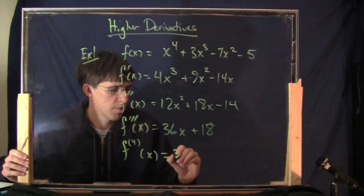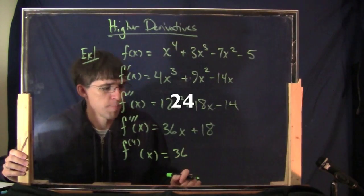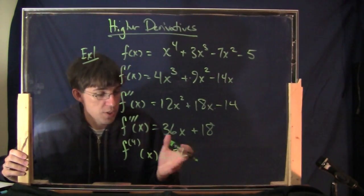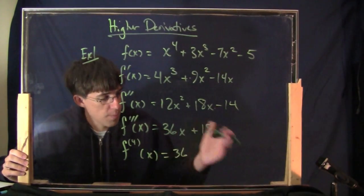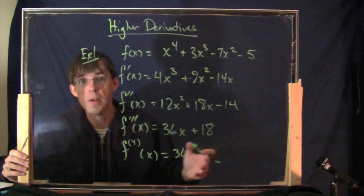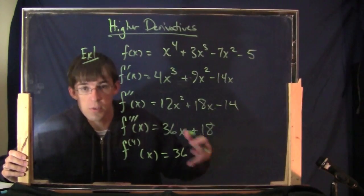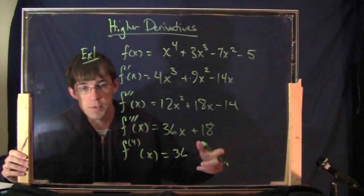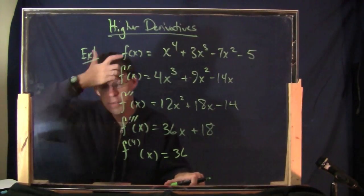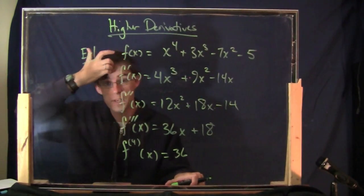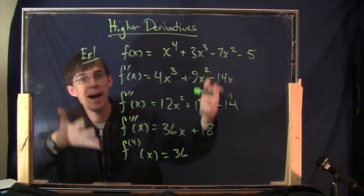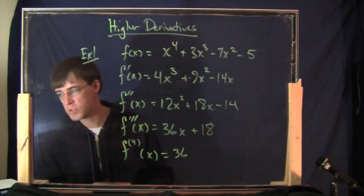Anyway, that would be 36. And then you could actually take the derivative one more time and you get zero. And then all the rest of them would be zero. If you take the derivative over and over again of zero, you get zero. These are the higher derivatives.